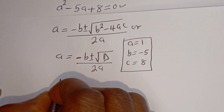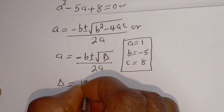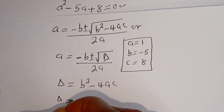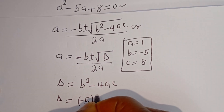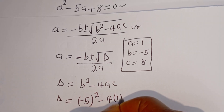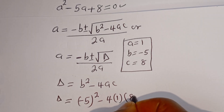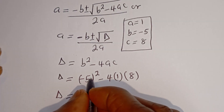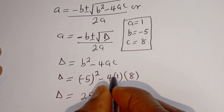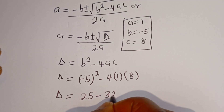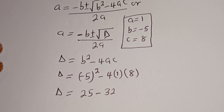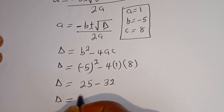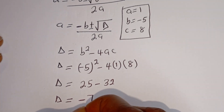Then we have the discriminant: D is equal to B squared minus 4AC. So D is equal to minus 5 squared minus 4 multiplied by 1 multiplied by 8. We have D equal to minus 5 squared, which is 25, minus 4 times 1 times 8, that is 32. Then the discriminant D is equal to 25 minus 32, which is minus 7.